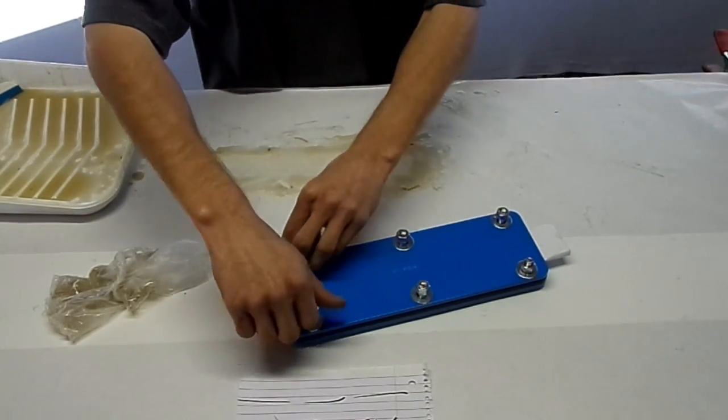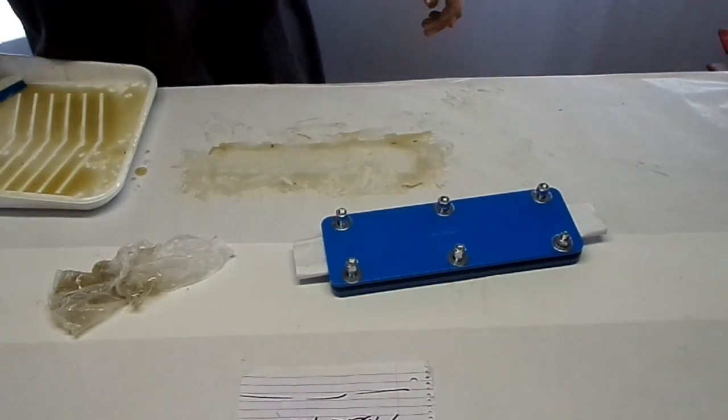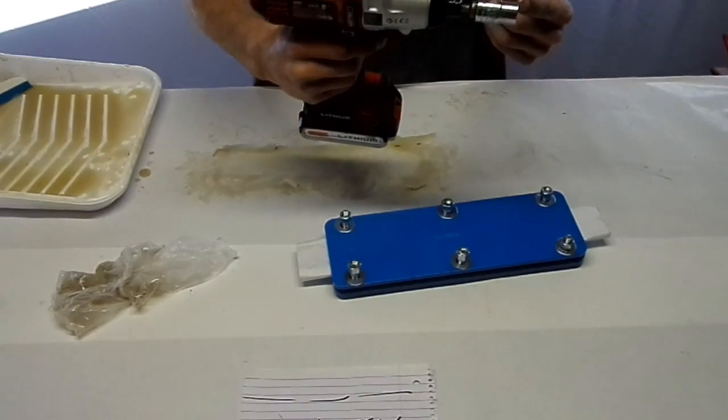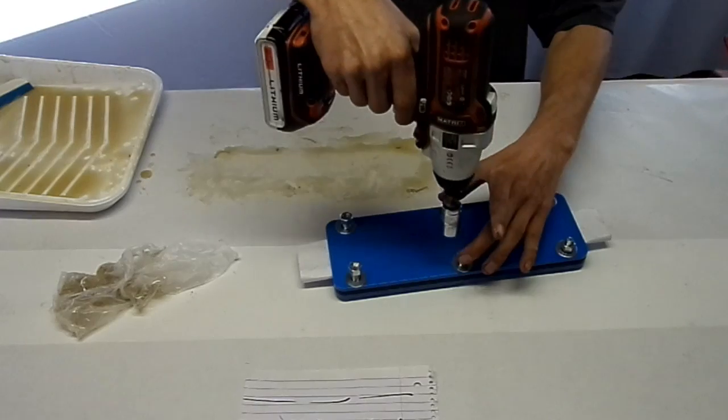And this is the best part of these presses is just how well they work. Get your impact gun that has the 9-16 socket and you just torque it down starting with the middle bolts.